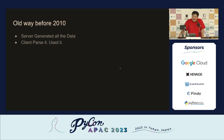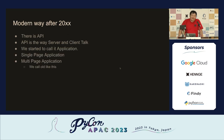But in the older ways, the server generated all the data and the client just received it. We didn't do client-side applications at that time. But after some time, there came APIs. API is the way the server and client talk.